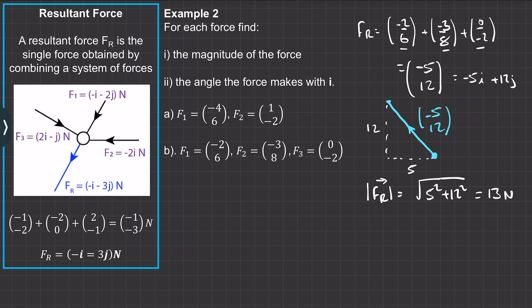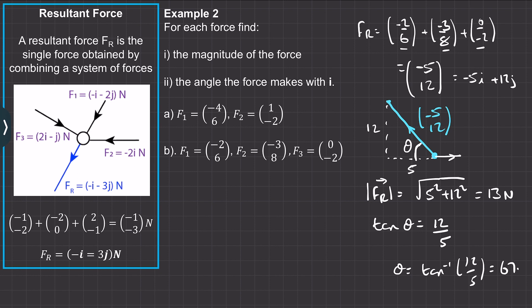The angle it makes with the i direction: tan(θ) = opposite over adjacent = 12/5, so theta = arctan(12/5), which gives approximately 67.4 degrees.